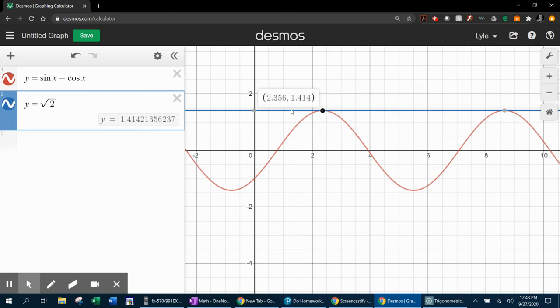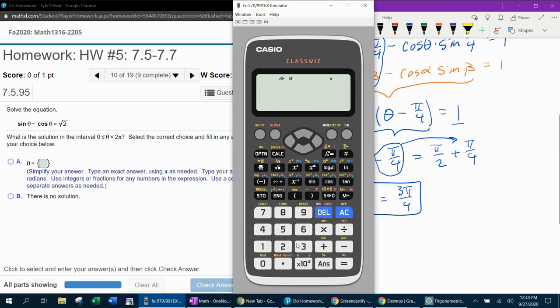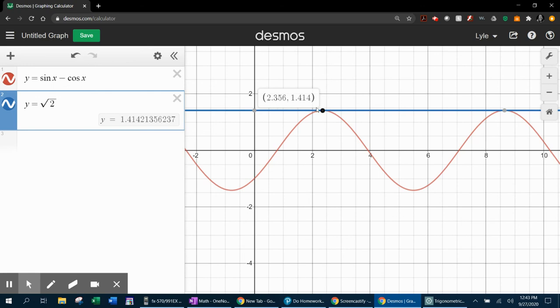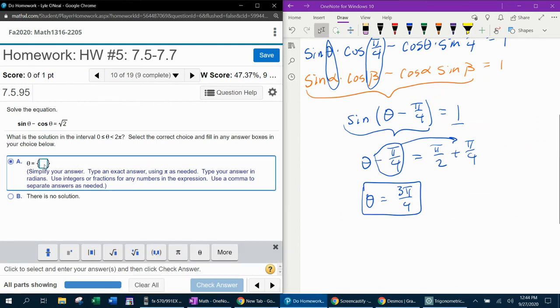The only place that those intersect is going to be at 2.356. And I wonder if that is 3 pi over 4. Let's do a calculation real quick. 3 pi over 4 is 2.356 approximately, which is what our Desmos told us. So that makes me feel a lot better about this solution. Let's see if MyLab Math likes it.